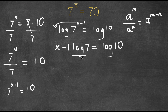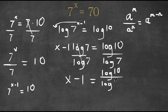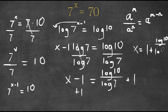Now I'm going to divide both sides by log 7. These two cancel out and I get x minus 1 is equal to log 10 over log 7. If I add 1 on both sides, I get x is equal to 1 plus log 10 over log 7.